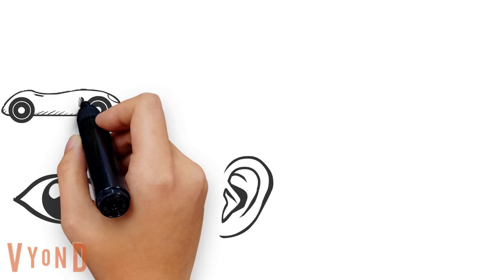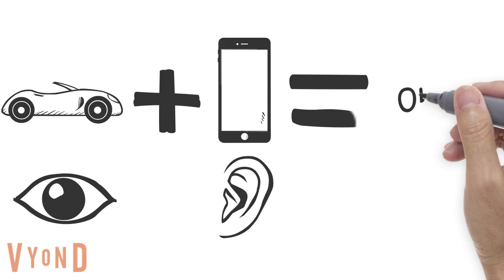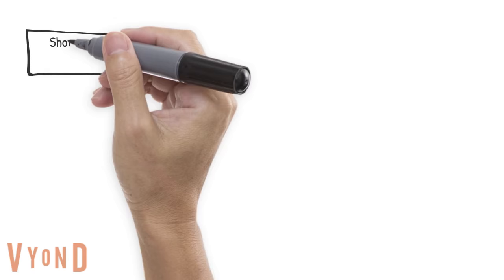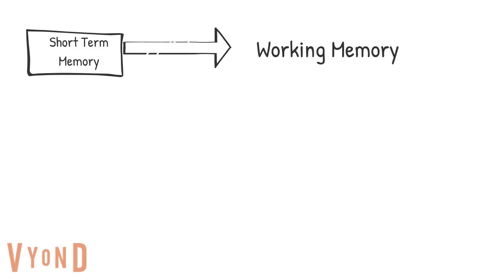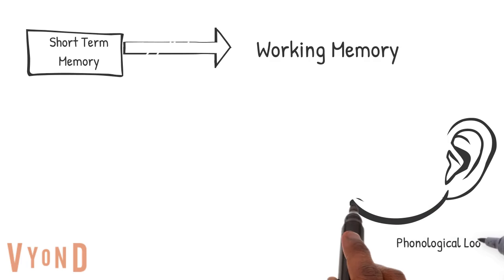However, we can do a visual task and a separate auditory task at the same time without any problem. This explains why we can drive a car — a visual task — and talk on the cell phone — an auditory task — at the same time without any problems. This led researchers to come up with a different conceptualization of short-term memory called working memory, which includes a component for auditory information called the phonological loop and a component for visual information called the visuospatial sketch pad.